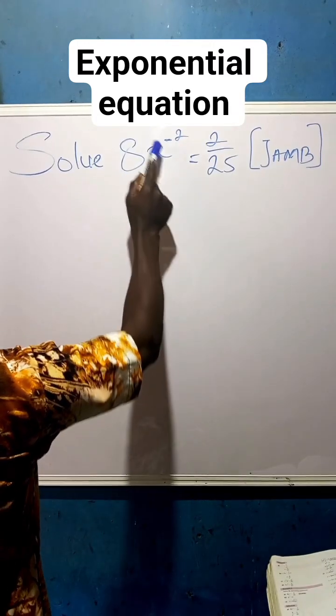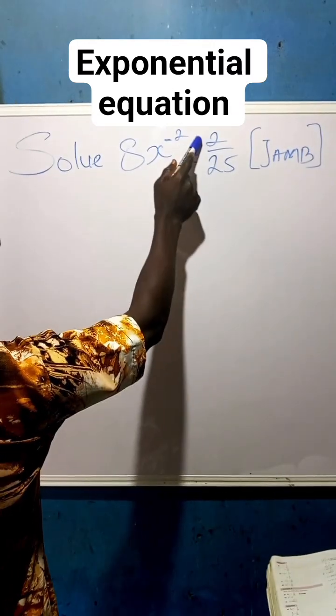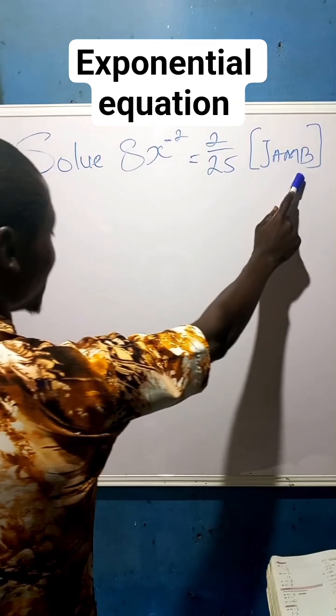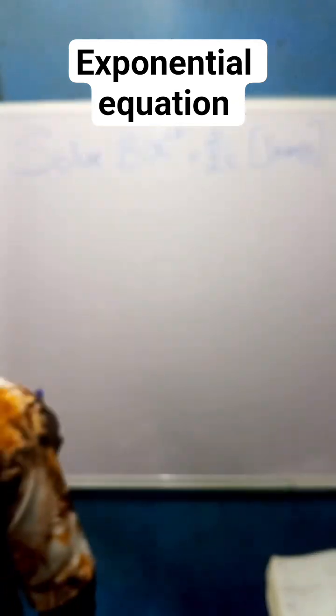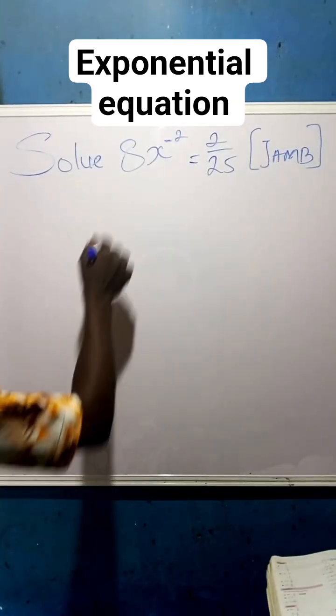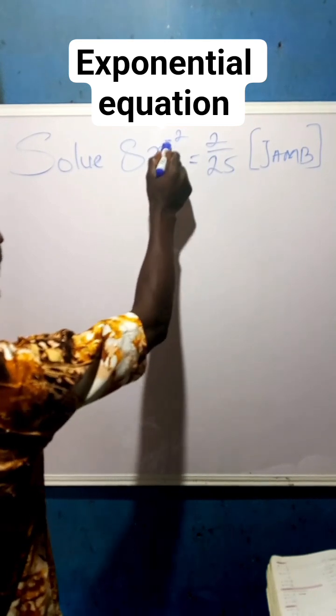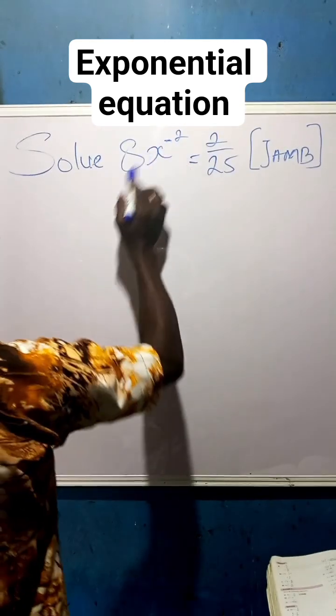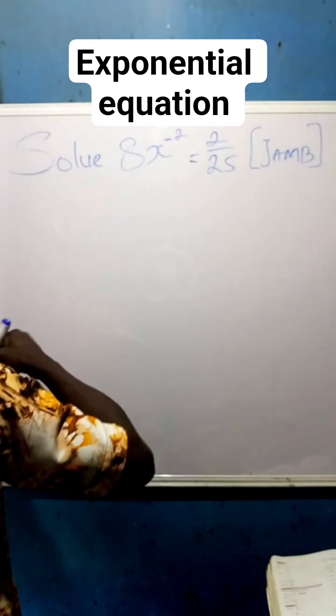So, 8x to the power of minus 2 equals 2 over 25 is our question. Now, what we are going to do first of all, we can find out that this x is having the power of negative. So what we are going to do is to, let's solve.